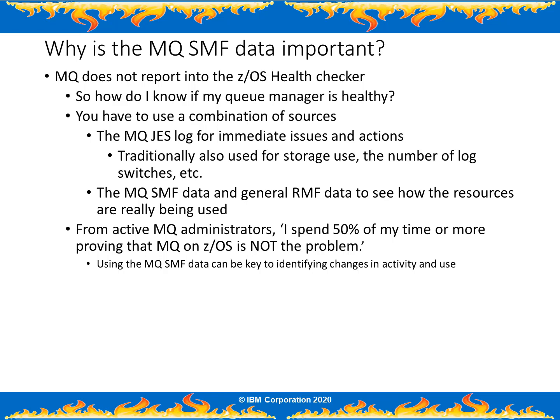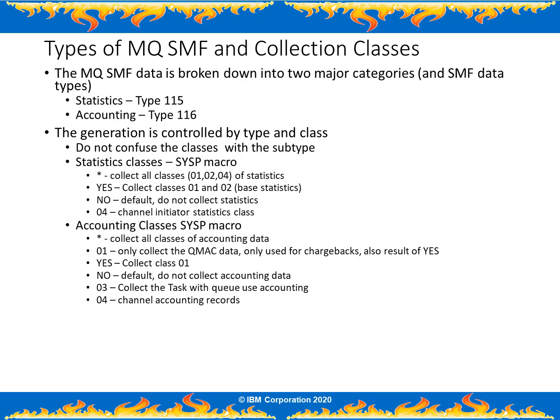Another use of MQSMF data is what one customer referred to as 'Mean Time to Innocence' studies — proving that MQ, especially MQ on ZOS, is not the problem. As more applications are constructed out of component parts that can run anywhere, including in a cloud-hosted environment, responsiveness problems can be more difficult to track down. Often the one clue that is immediately evident is the message depth on a queue, and that makes MQ appear to be the bottleneck. Some administrators have reported that they are spending more of their time proving that MQ is not where work is slowing down. So let's introduce the MQSMF data itself.